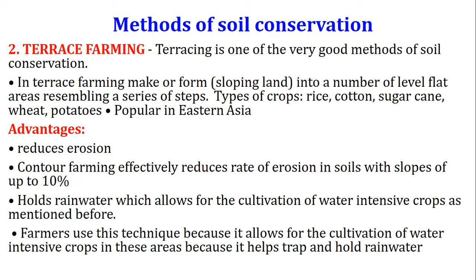The next method is terrace farming. Terracing is a very good method of soil conservation where land is formed into a number of level flat areas resembling a series of steps. Crops cultivated using terrace farming include rice, cotton, sugarcane, wheat, and potatoes. This method is very popular in Eastern Asia. Advantages include reduced erosion, and contour farming effectively reduces the rate of erosion on slopes of up to 10%. It holds rainwater, allowing for cultivation of water-intensive crops by trapping and retaining rain water.